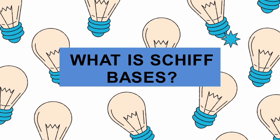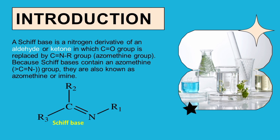Schiff bases are compounds formed as a result of a nucleophilic addition reaction of aldehydes and ketones with primary amines under suitable conditions, which have a carbon-nitrogen double bond in their structure. They are nitrogen derivatives of an aldehyde or ketone in which the carbon-oxygen double bond is replaced with a carbon-nitrogen double bond, also known as the azomethine group.